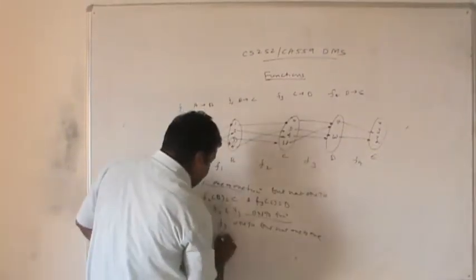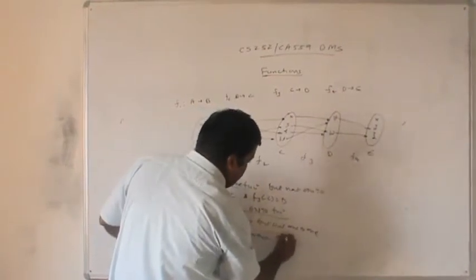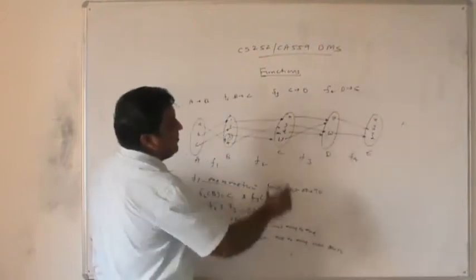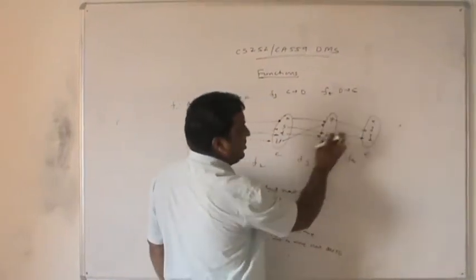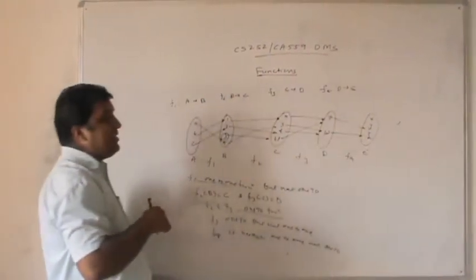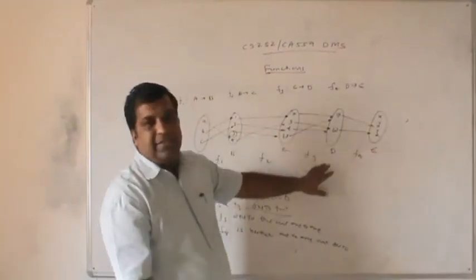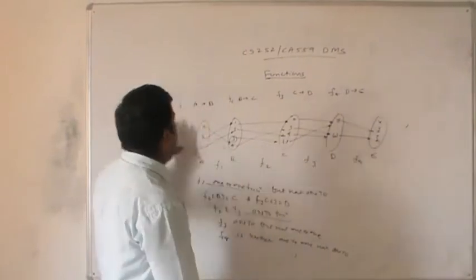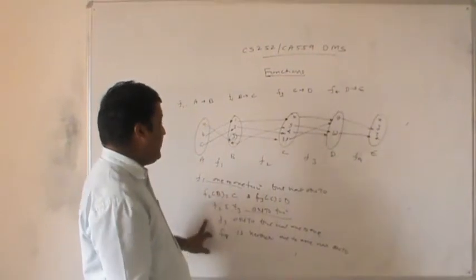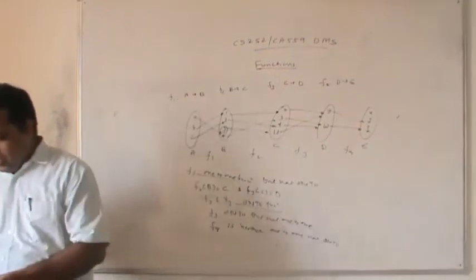F4 is neither 1-to-1 nor onto: it is not 1-to-1 because it does not have distinct images, and it is not onto because not every element of D has a preimage. So F1 is 1-to-1 but not onto; F2 and F3 are onto; and F4 is neither 1-to-1 nor onto.